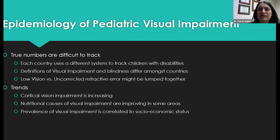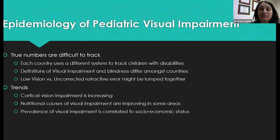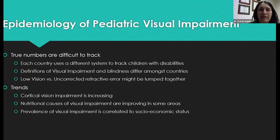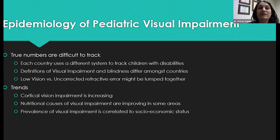There are some important trends to look at. First, cortical vision impairment as a diagnosis is increasing — medical care is improving dramatically for kids with brain injury, so survival rates are improving and we now have a population of children with this condition who need rehabilitation. Additionally, nutritional causes of visual impairment are improving in some areas, such as vitamin A deficiency, through better nutritional care. Also, the prevalence of visual impairment correlates to socioeconomic status.